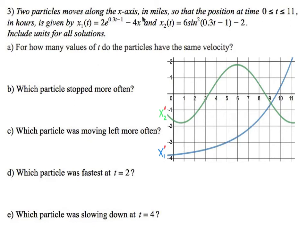Two particles move along the x-axis in miles. The position from 0 to 11 hours is given by two functions. These two graphs are the derivatives of x2 and x1, so they represent velocity in miles per hour.